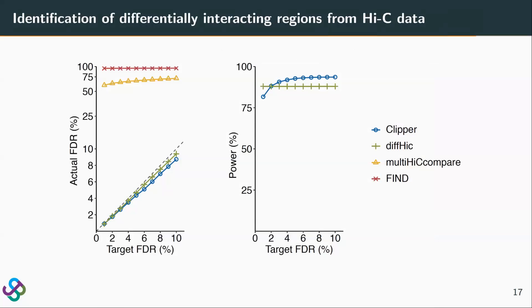For the Hi-C analysis, we looked at three Hi-C tools and only DeepHiC can control the FDR. Compared to DeepHiC, Clipper has advantages in power for target FDR greater than 2%.